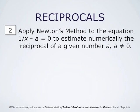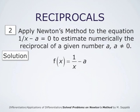Computers can add, subtract, and multiply easily. Division is a different story. Newton's method can be applied here. In this problem, our task is to apply Newton's method to the equation 1/x minus a equals 0 to estimate numerically the reciprocal of a given number a, where a must be different from 0. The function lowercase f is 1/x minus a, as given in the problem.